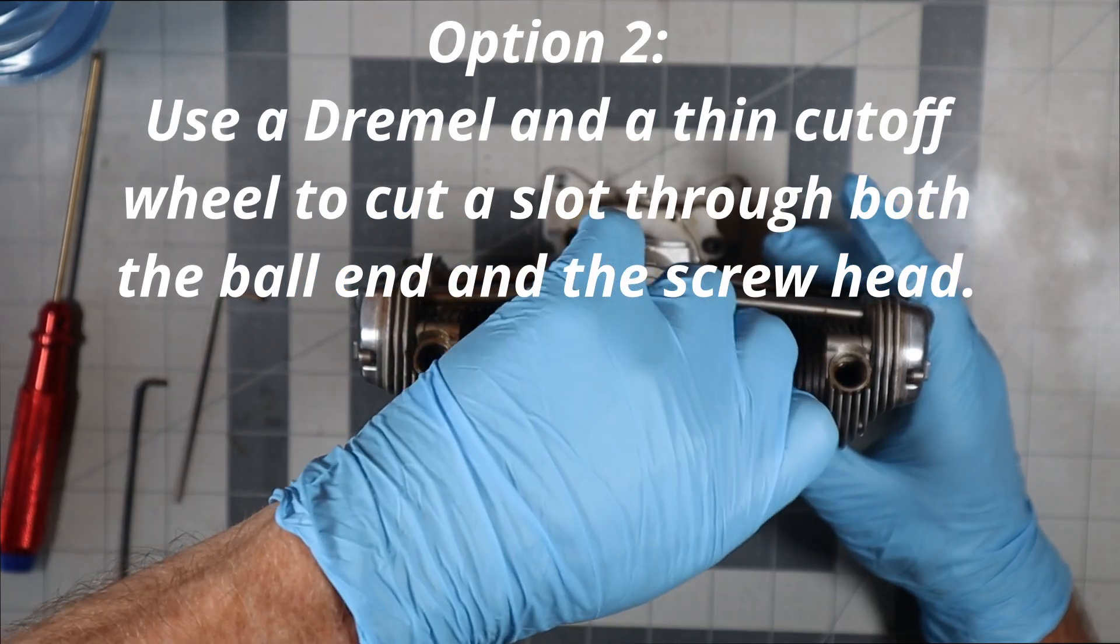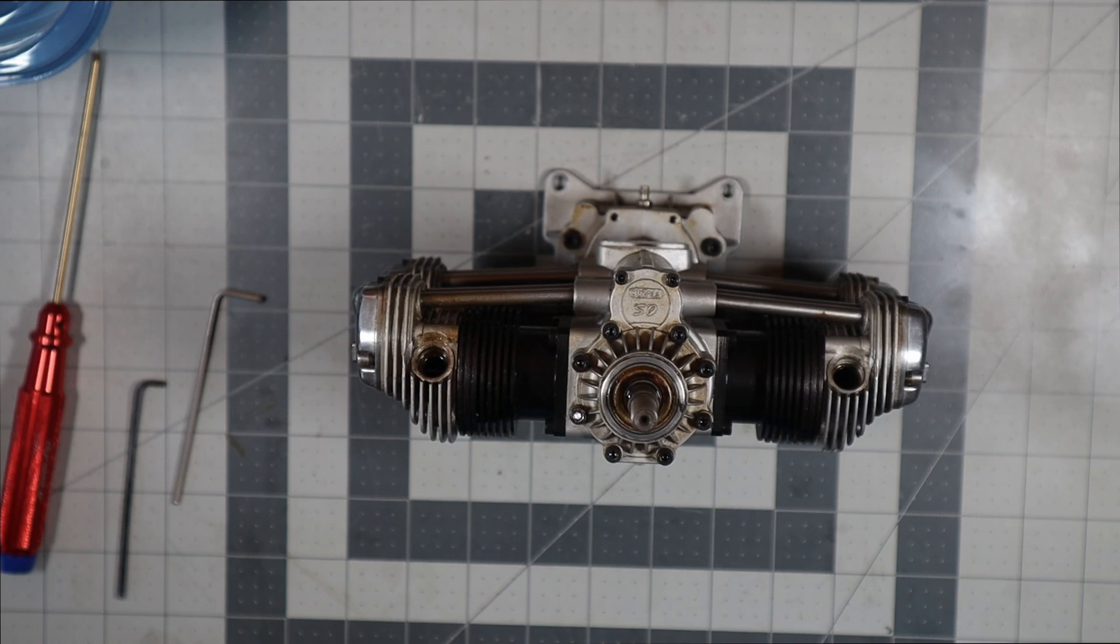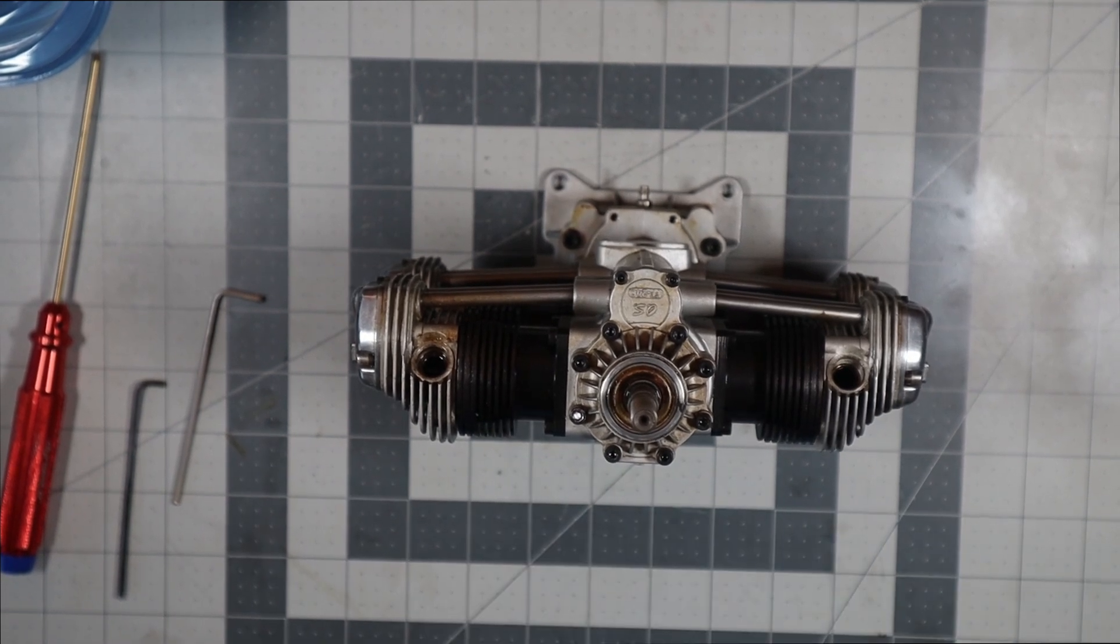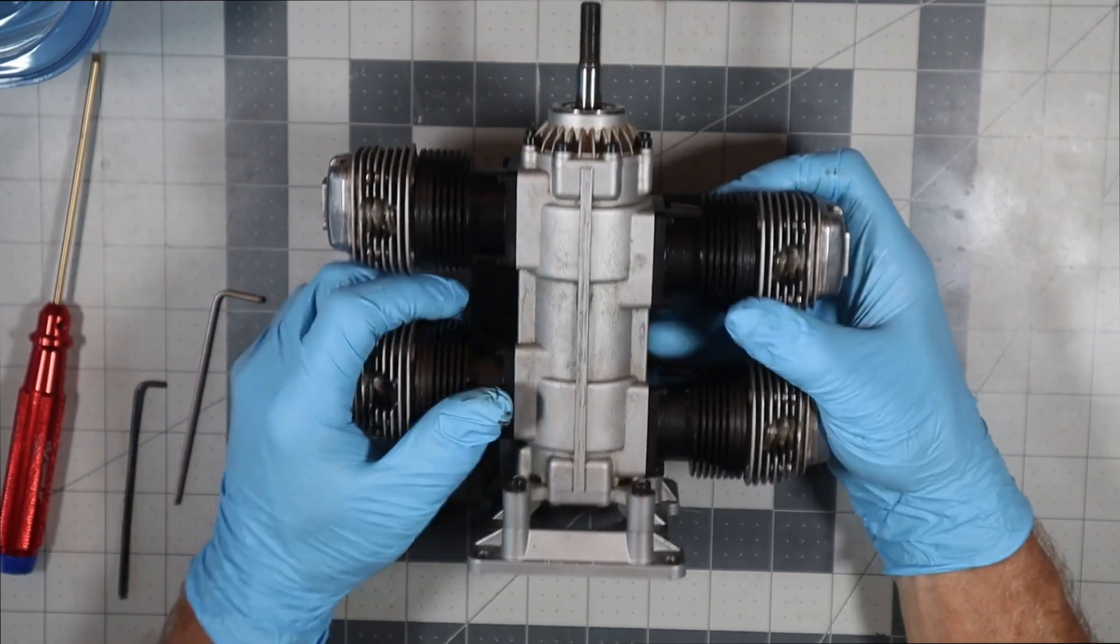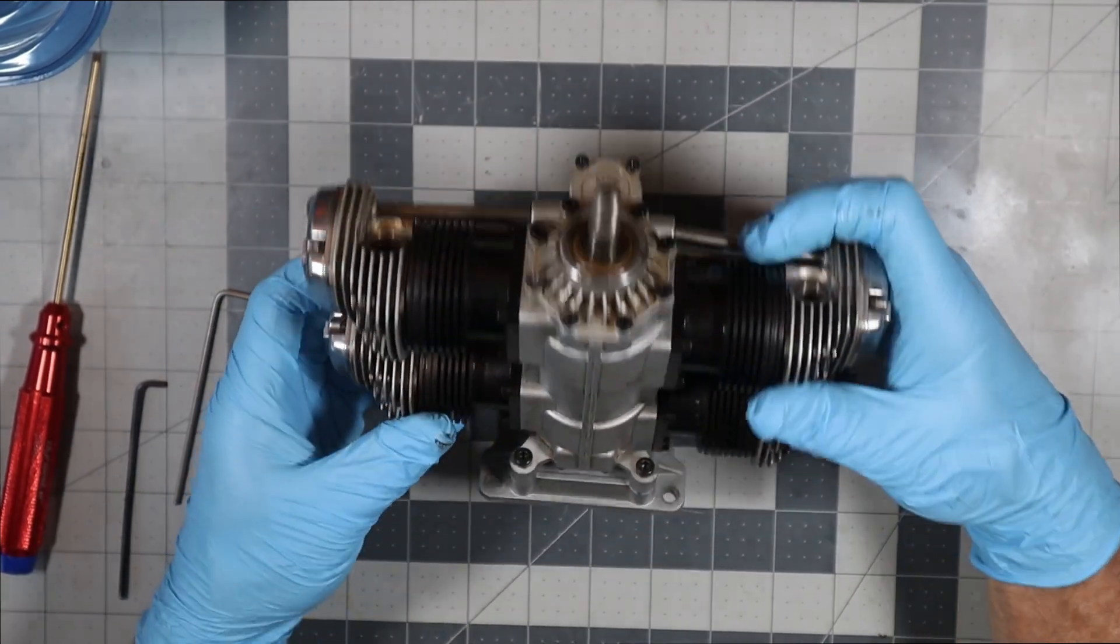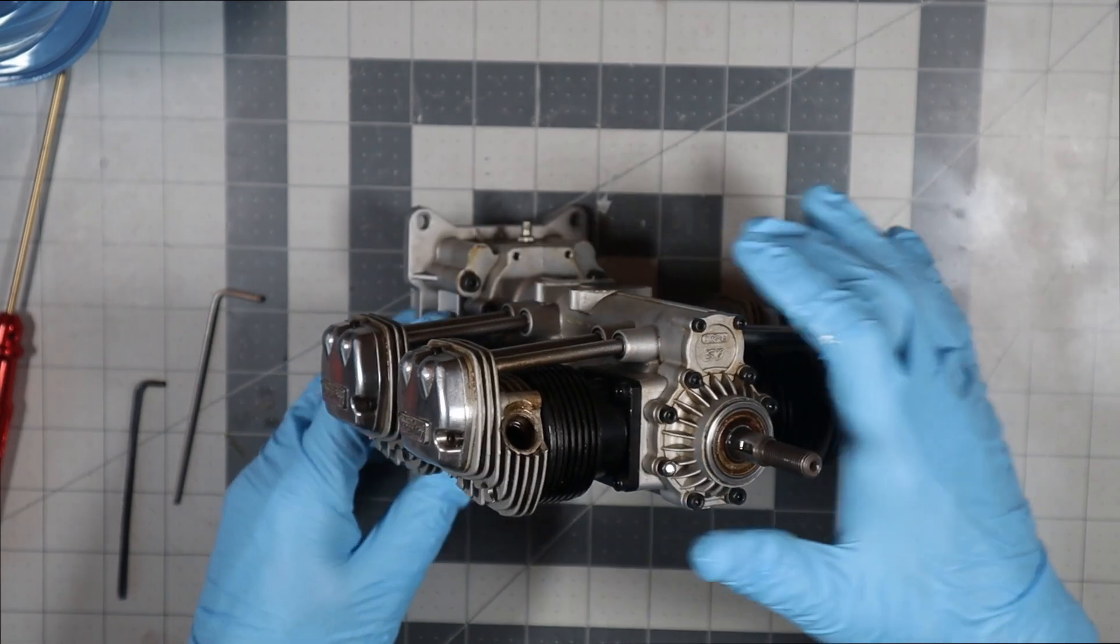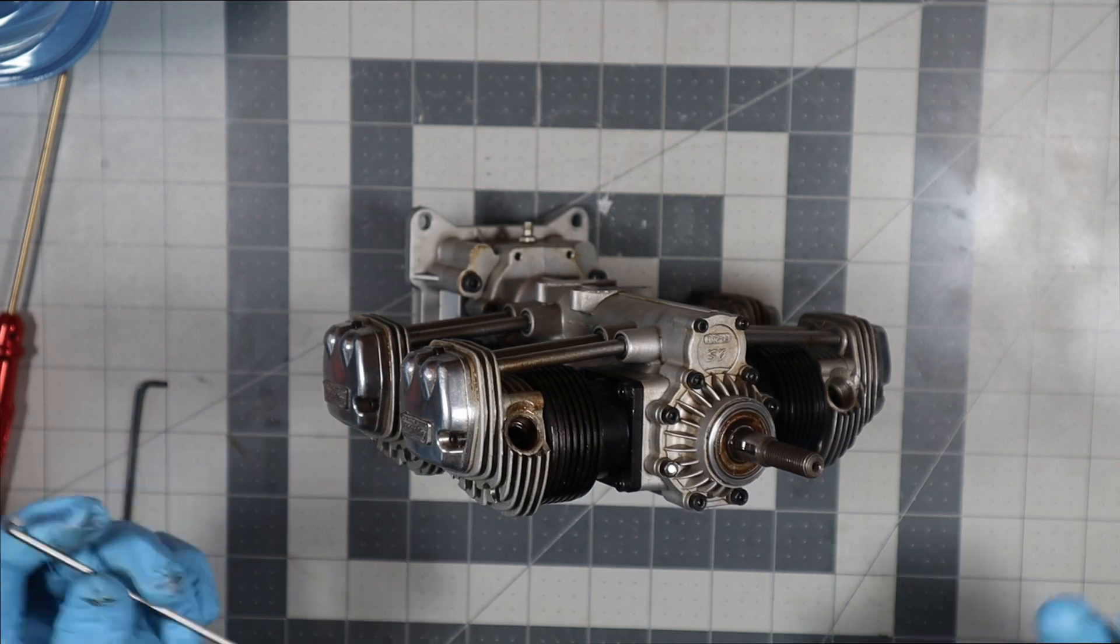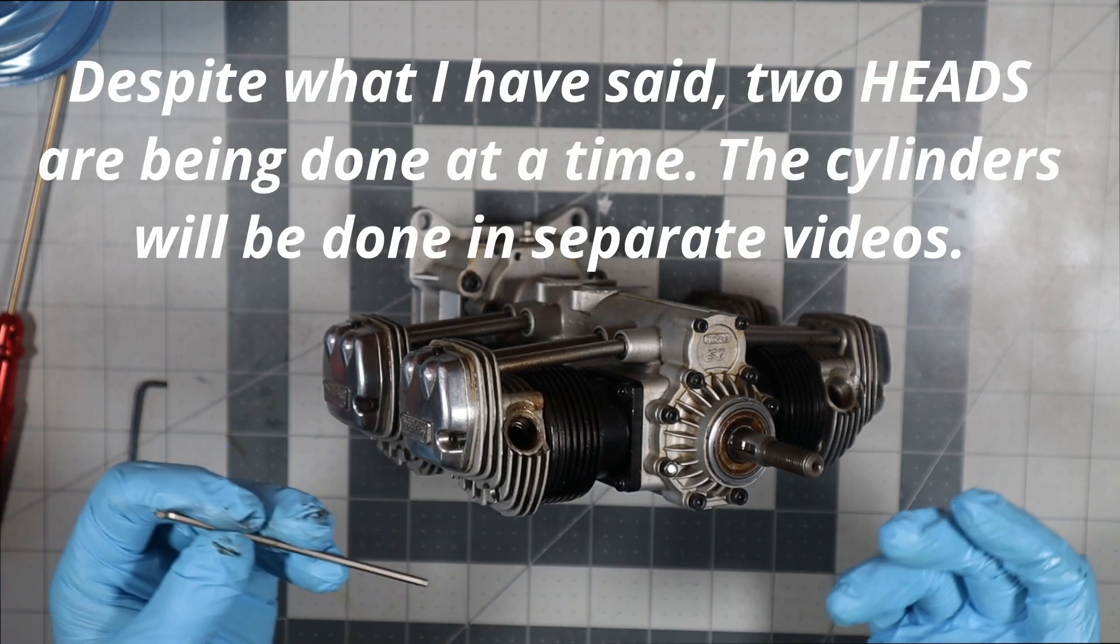So one thing I saw that I didn't remove yet that I don't want to lose is this washer here. So we're gonna continue on. Now JP said he thinks there's something wrong with cylinder one. Unfortunately, cylinder one is probably gonna be the last one I get to, just because it's on the bottom.